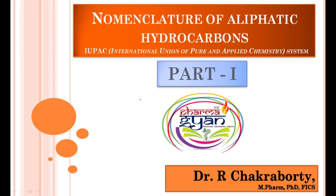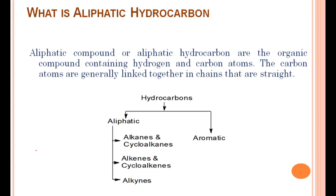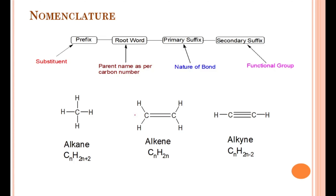Let's start with the topic. Aliphatic hydrocarbons are hydrogen and carbon-containing compounds in which the carbons are generally linked together in a chain structure. Hydrocarbons are broadly divided into two types: aliphatic and aromatic. Aliphatics can be further divided as alkanes, cycloalkanes, alkenes, cycloalkenes, and alkynes. In this video I am going to discuss specifically about the nomenclature of aliphatic hydrocarbons.